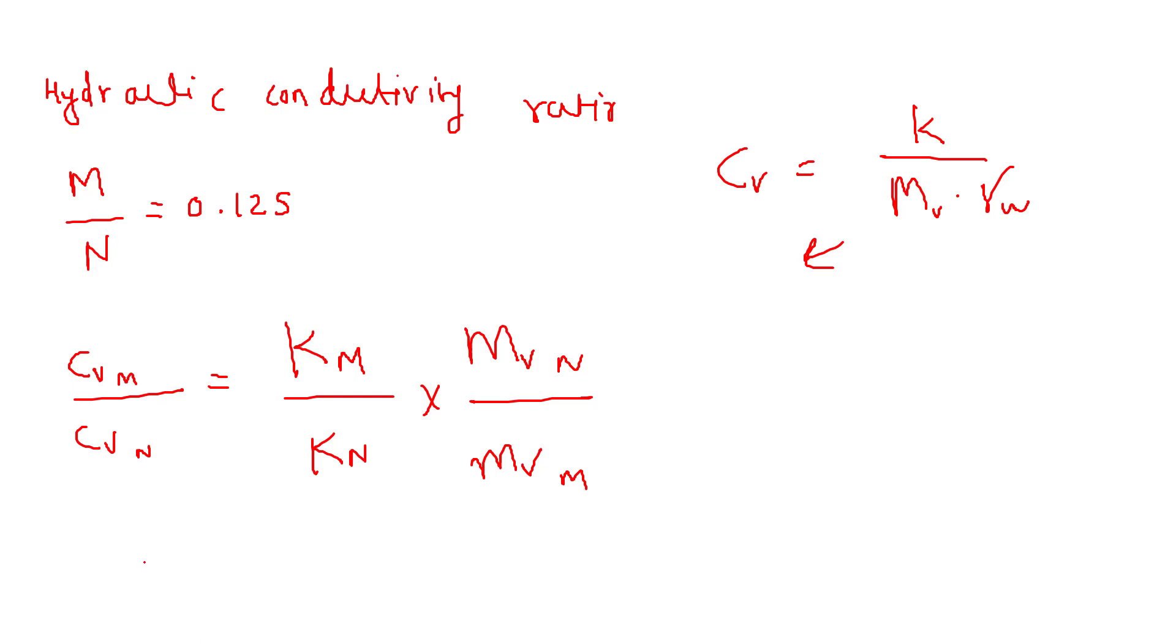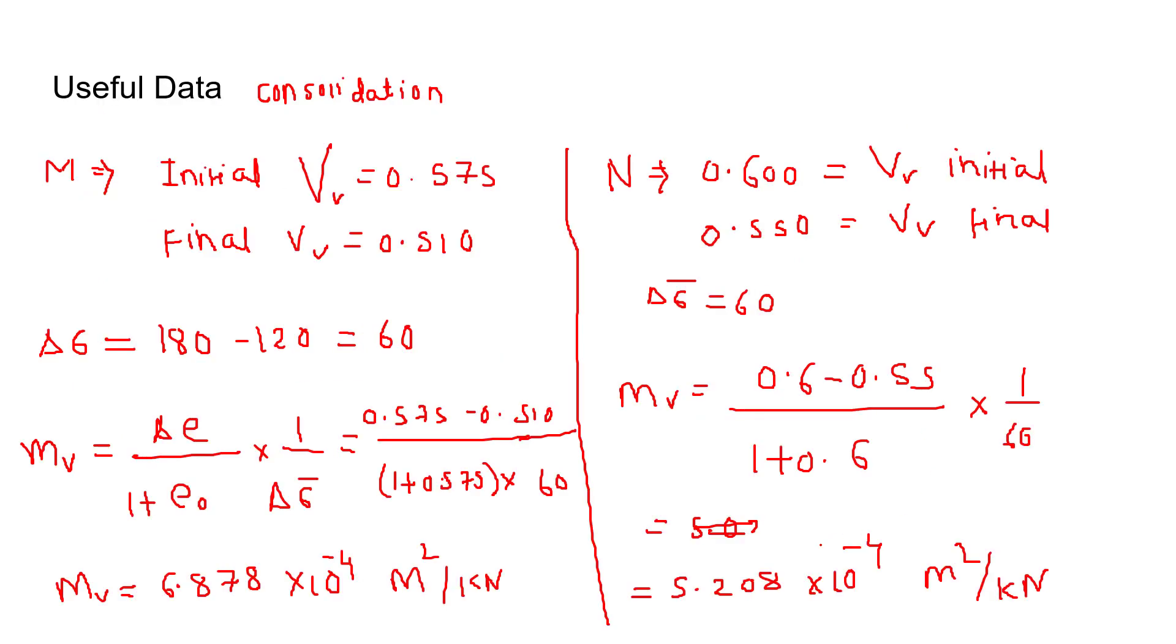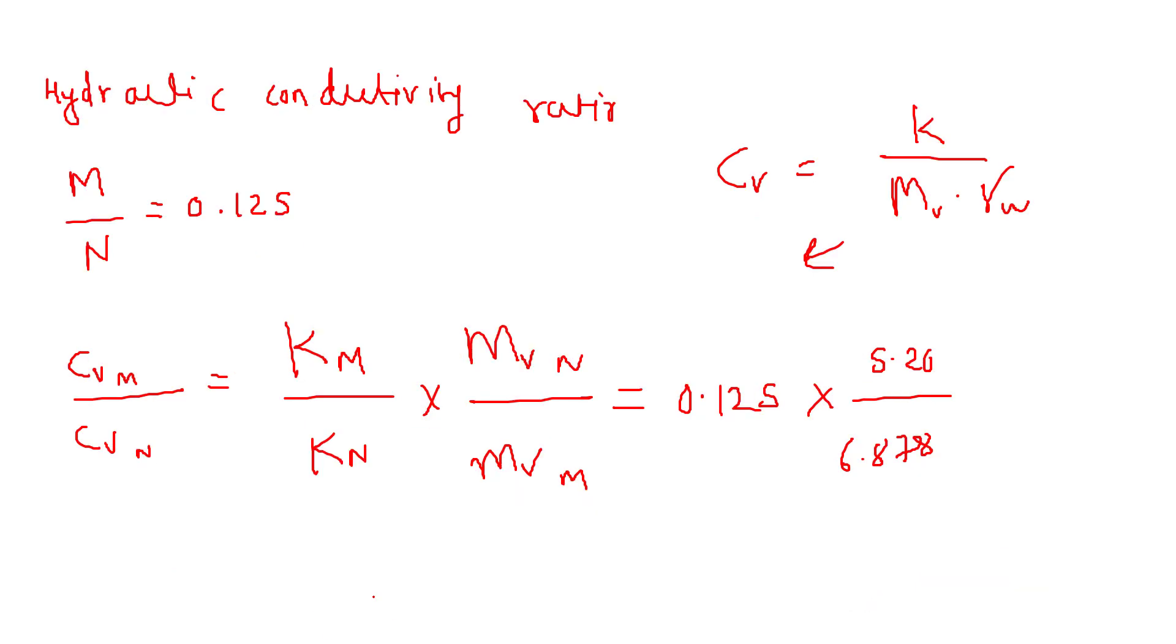If you put the value, let's try to put all the values. So this ratio is 0.125 into 5.208 upon 6.878. This is the ratio we have calculated. So 10⁻⁴, 10⁻⁴ will get cancelled.